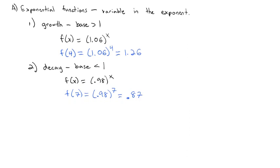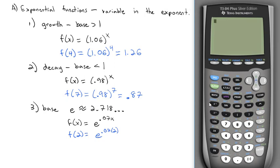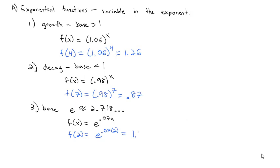In business, finance, and economics, there is one base we see quite a bit, and that is base e. Similar to pi representing 3.14159, e represents an irrational decimal approximately equal to 2.718, going on forever similar to pi. So if we had f(x) = e^(0.07x), we could find f(2) = e^(0.07×2) on the calculator. Hit second and then the ln key near the number 4, type in 0.07 times 2, and we get approximately 1.15.